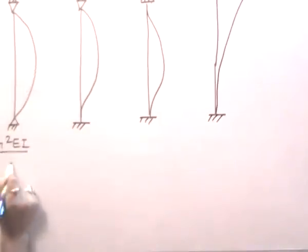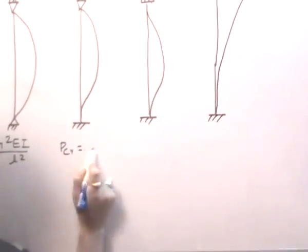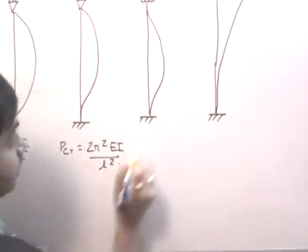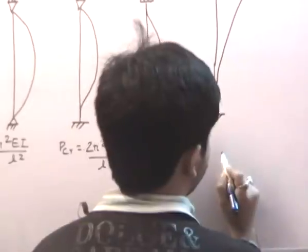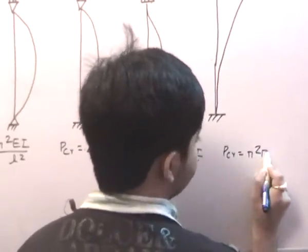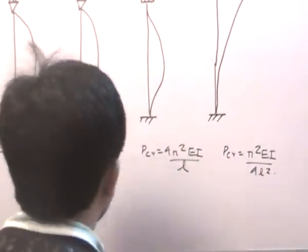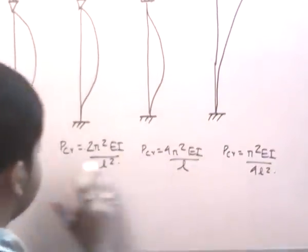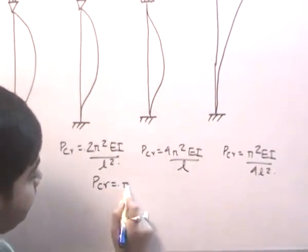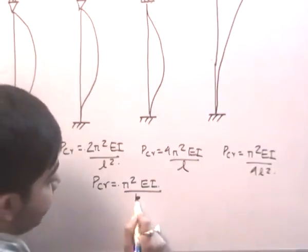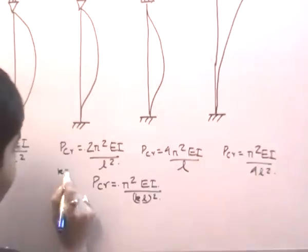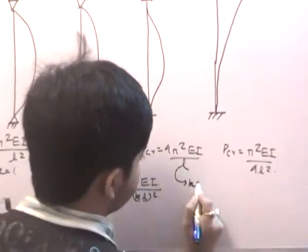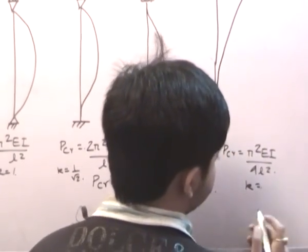Writing the equation in general form: PCR = π²EI / (KL)². For hinge-hinge, K = 1. For fixed-hinge, K = 1/√2. For fixed-fixed, K = 1/2. For fixed-free, K = 2. K is the factor that depends on the fixity of the end conditions.